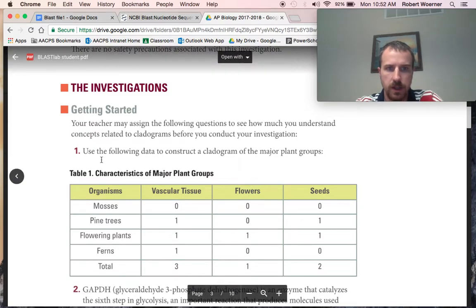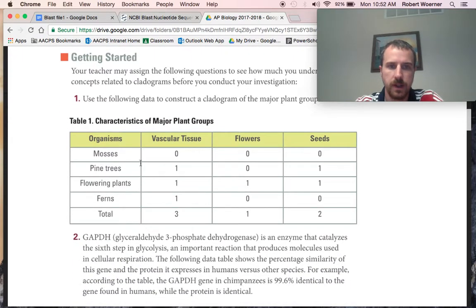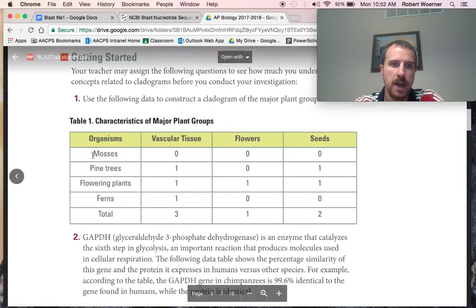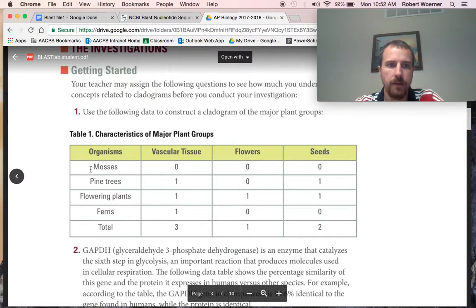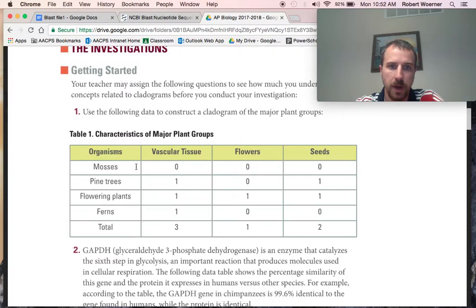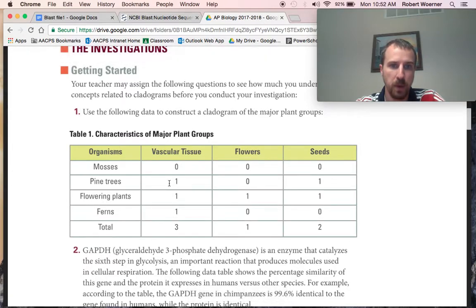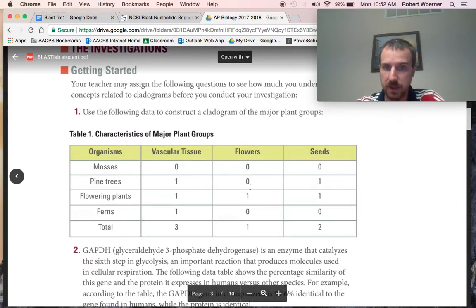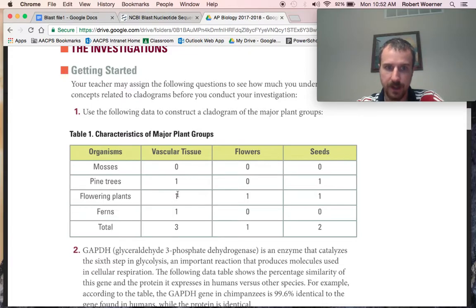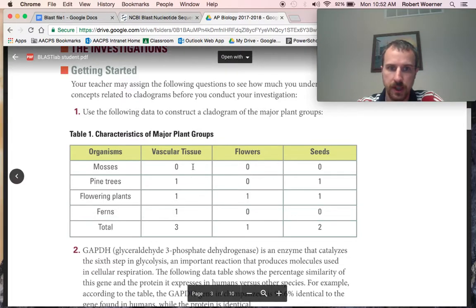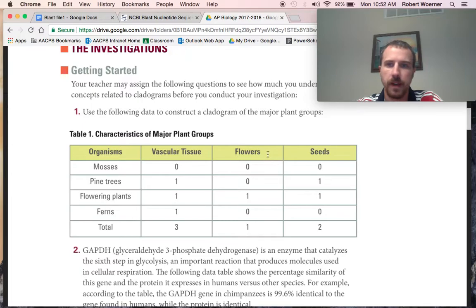So to start, what I would like you to do is go through this, make a cladogram of these major plant groups. We have the mosses. Notice how they don't have a vascular tissue, flowers, or seeds. Pine trees have both vascular tissue and seeds, but they don't have flowers. Flowering plants have all three. Ferns just have vascular tissue.